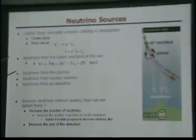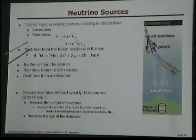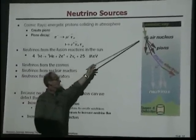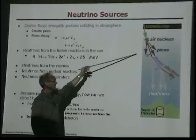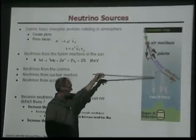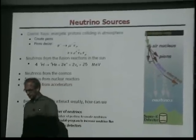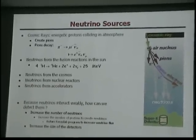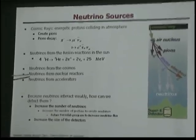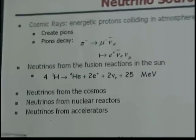So what are the sources for neutrinos? We get neutrinos from cosmic rays — cosmic rays are protons that interact in the atmosphere, create pions, and pions decay into muons. Muons decay and give us muon neutrinos and also electron neutrinos. We can get neutrinos from the sun because of fusion, from nuclear reactors, or we can make them ourselves.